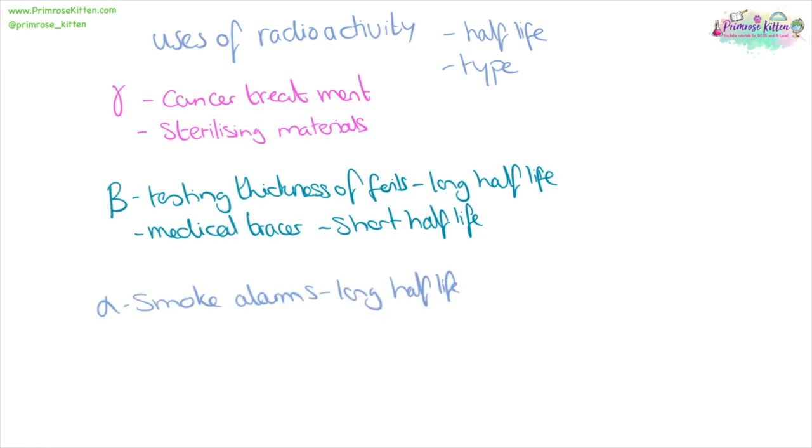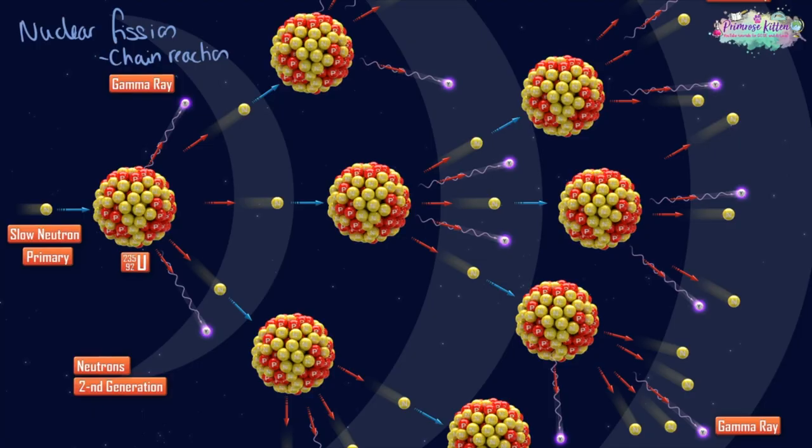Alpha radiation is used in smoke alarms, and this, again, we want it to have a long half-life. In nuclear fission, the breaking apart of atoms, we have a chain reaction. The first neutron is fired out of something, and it hits our heavy radioactive element, whether that's uranium or plutonium, it doesn't really matter for this instance. It splits it,